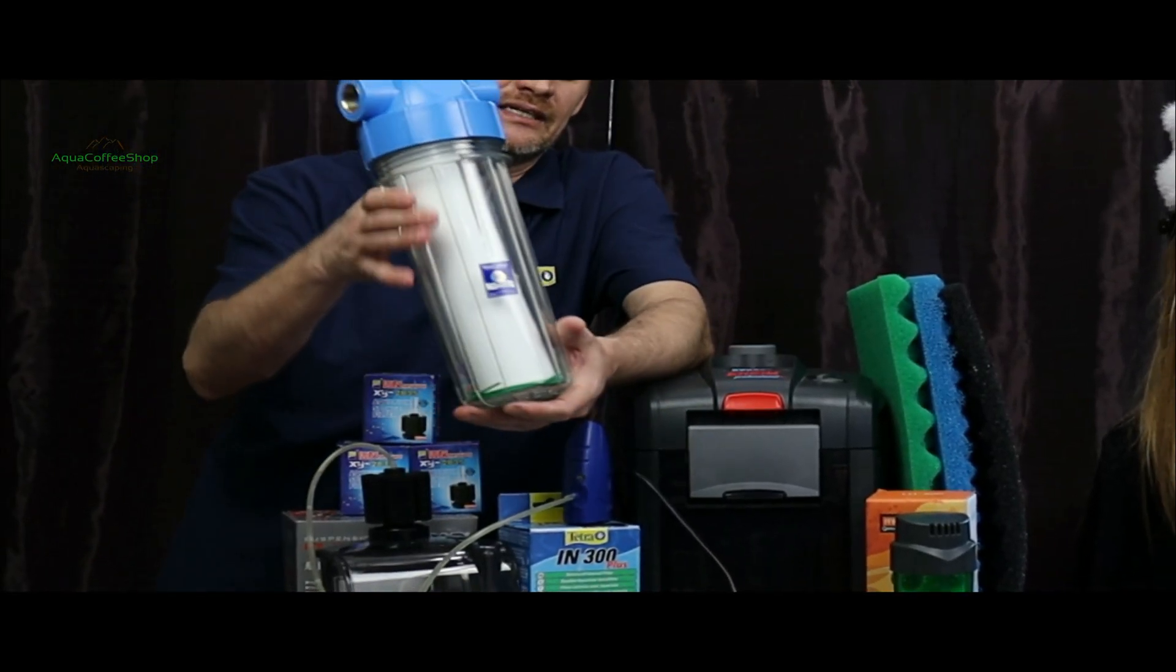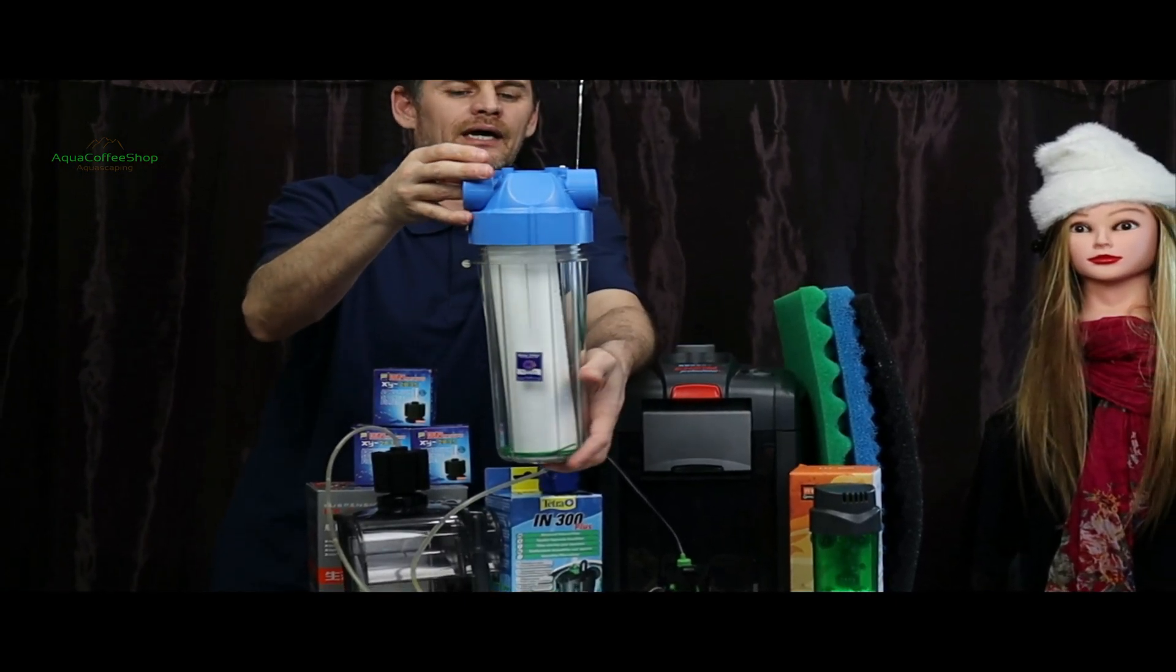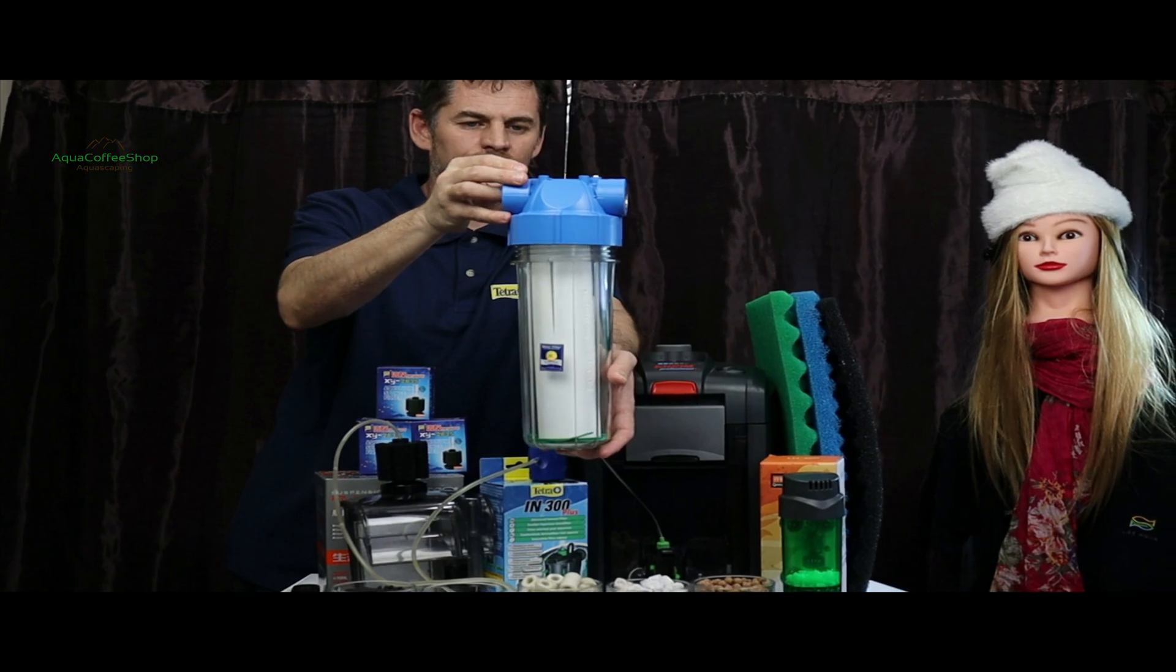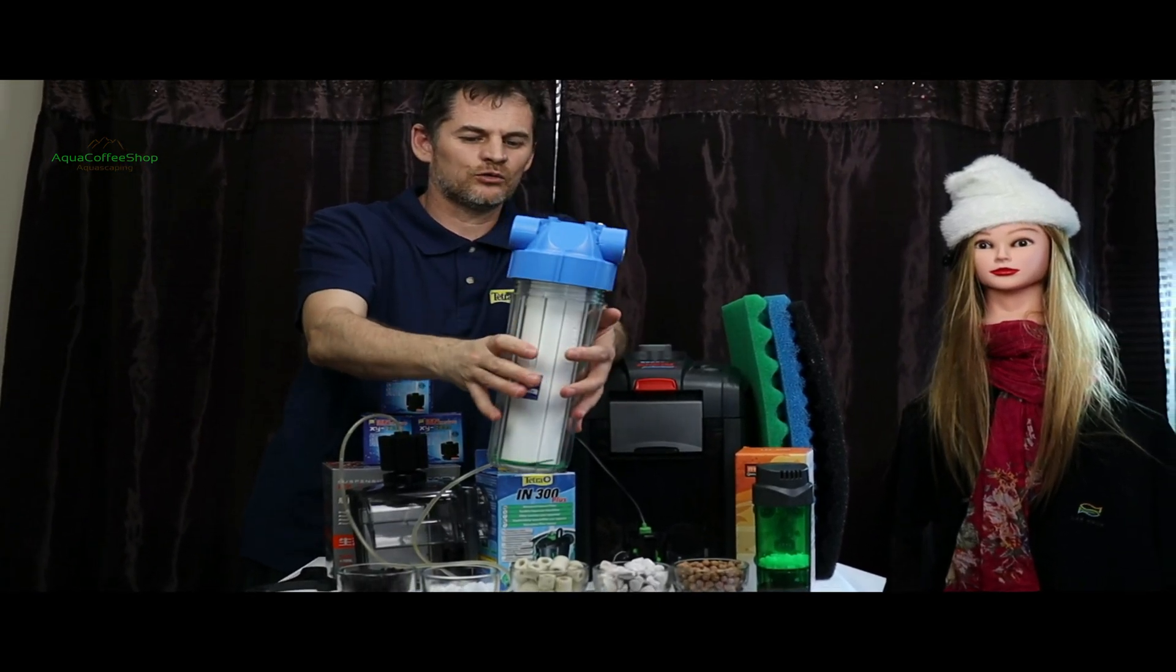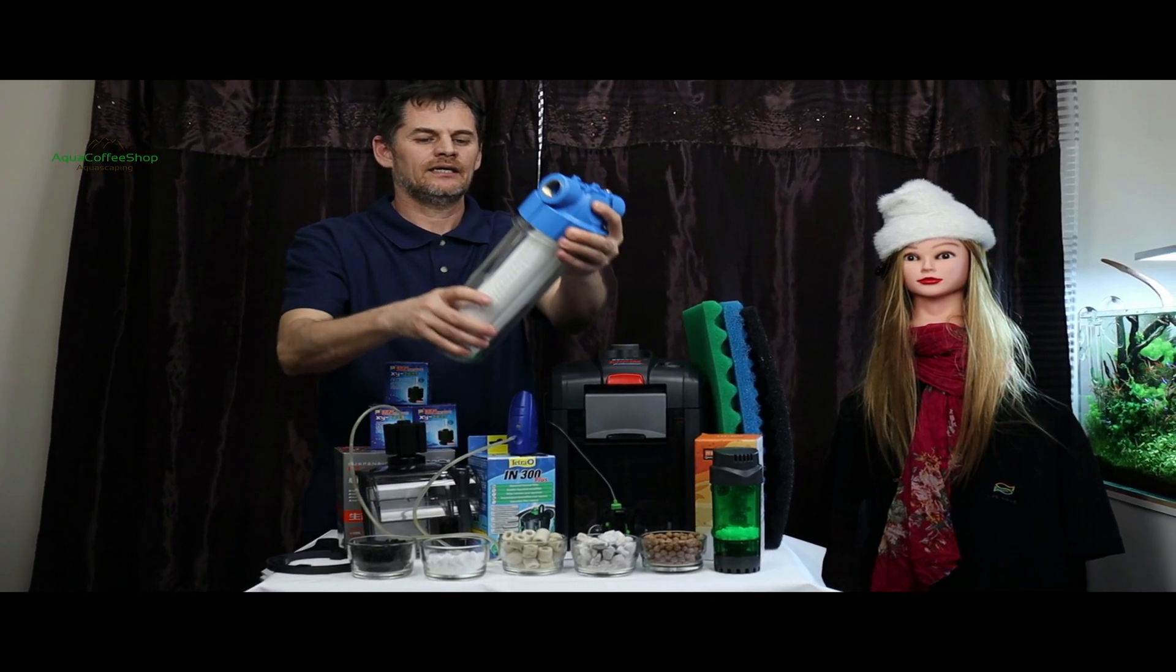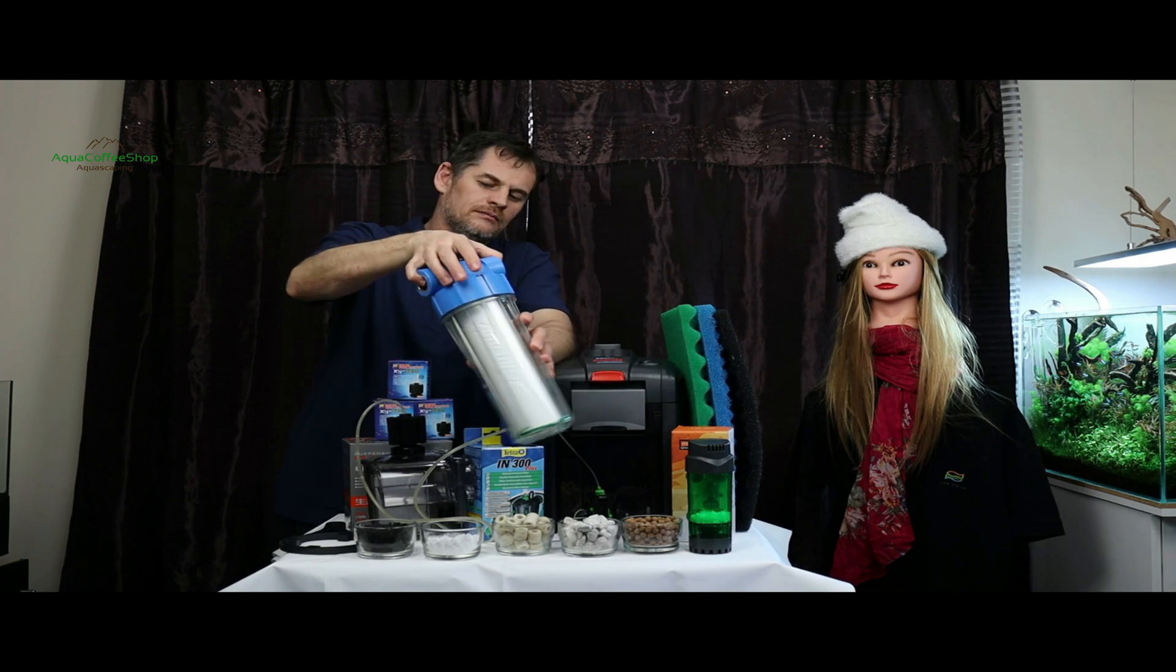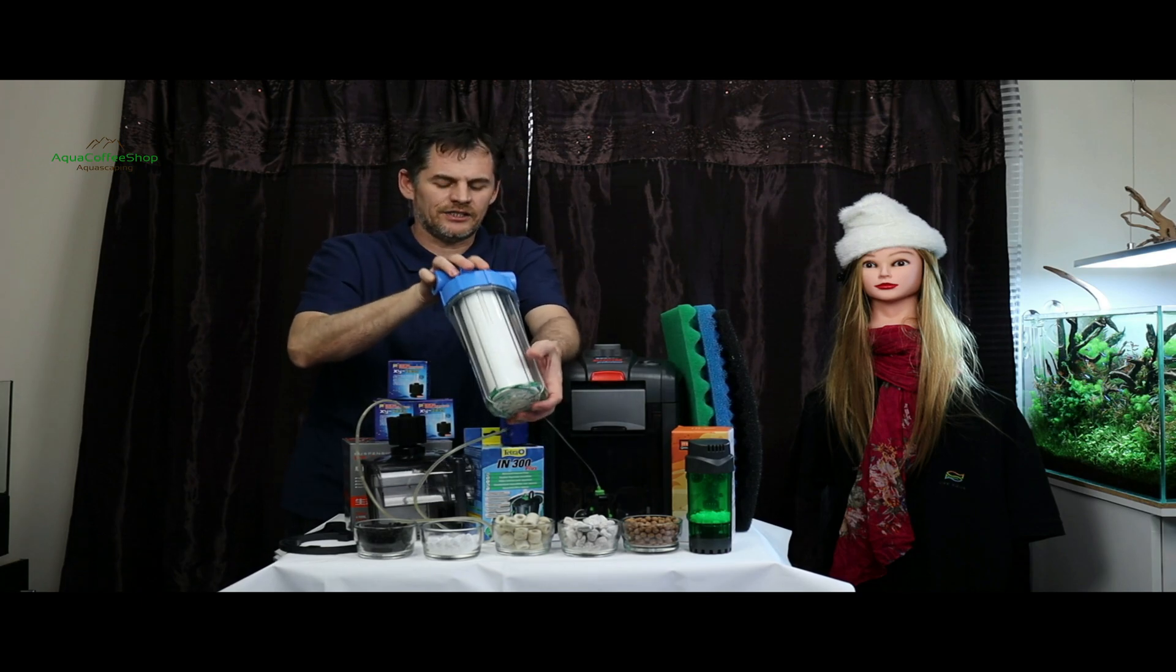To make a fluidized bed filter outside the aquarium, mounted on the output of the external filter, you can use such a water filter that will be connected to the external filter. Inside it you can introduce different biological, chemical, or mechanical materials.